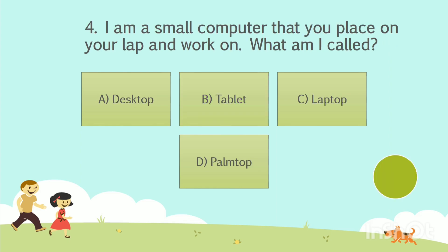Question No. 4: I am a small computer that you place on your lap and work on. What am I called? Option A: Desktop. Option B: Tablet. Option C: Laptop. Option D: Palm Top. Your time starts now. The answer is Option C: Laptop.